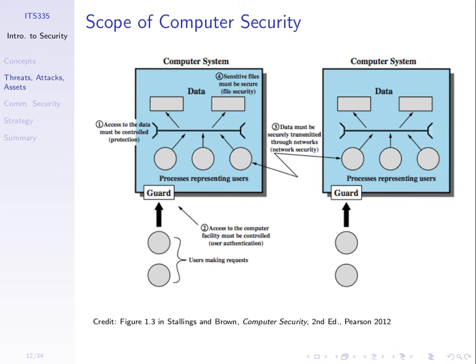Looking back at a picture from the very first lecture that introduced IT security, the scope of computer security shows that we have a computer system — in fact two computer systems — with users that use those systems, and different security issues that arise.